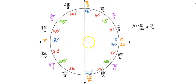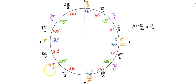Adding one-fourth each time: 1/4, 2/4 = 1/2, 3/4, 4/4 = 1, 5/4, 6/4 = 3/2, 7/4, 8/4 = 2. So when using the 45-degree pattern, you're adding one-fourth pi every 45 degrees.